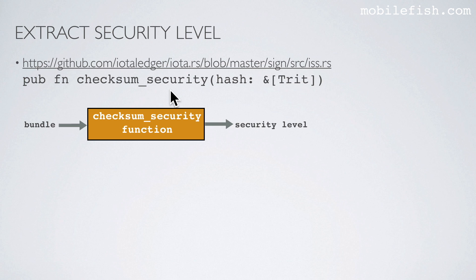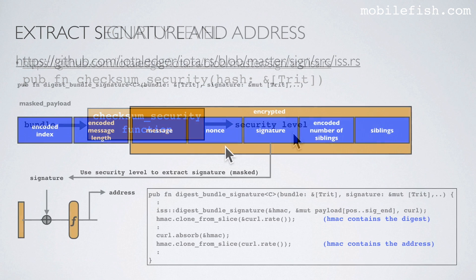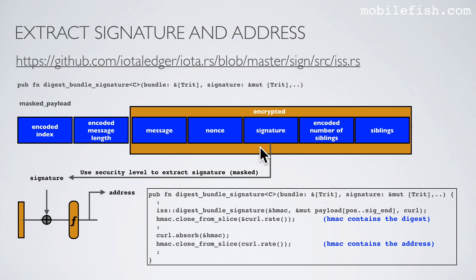Next we need to extract the security level. The security level is extracted using the checksum_security function which is located in this file. The checksum security function uses the bundle as input and outputs the security level. We extracted the security level from the bundle. Now we know where the signature begins and where it ends in our mask payload. The mask signature is extracted from the mask payload, absorbed, and the transformation function is applied. This transformation function will generate the address, and how the address is calculated will be explained in the next slides. This transformation function is called the digest_bundle_signature function, which can be found in this file.